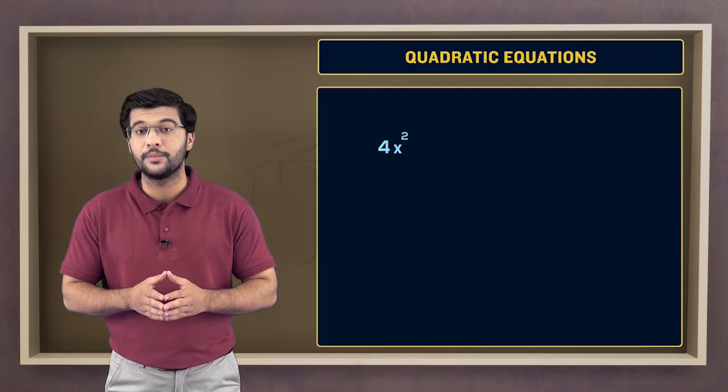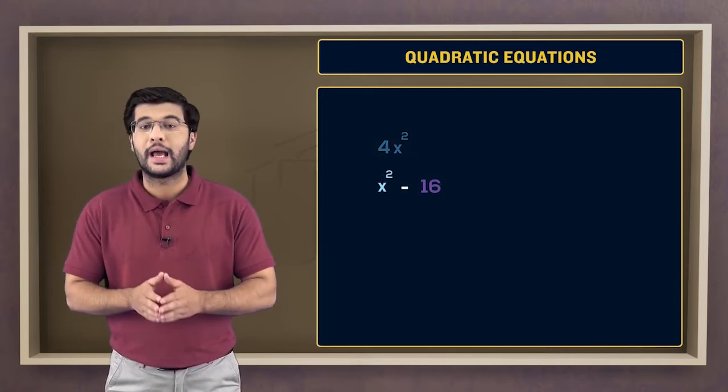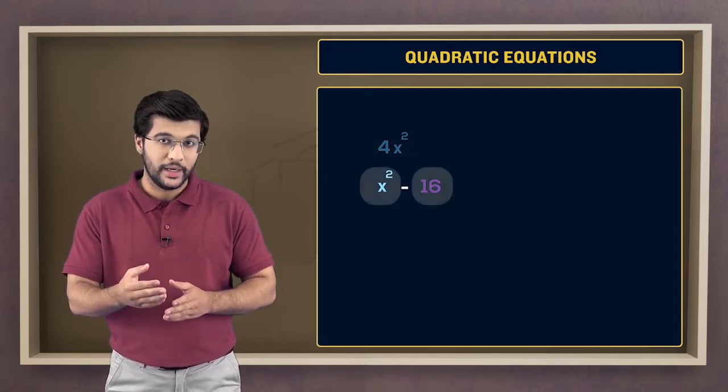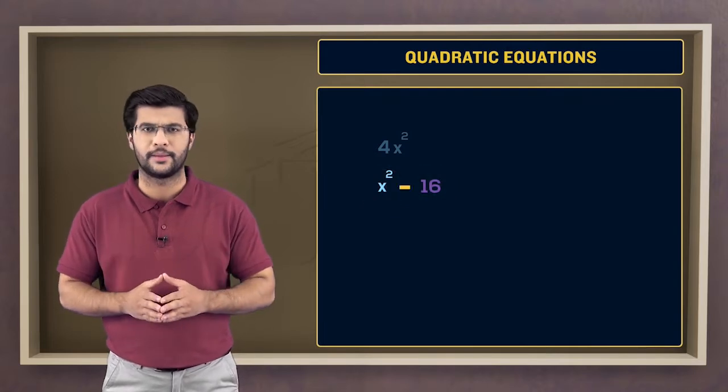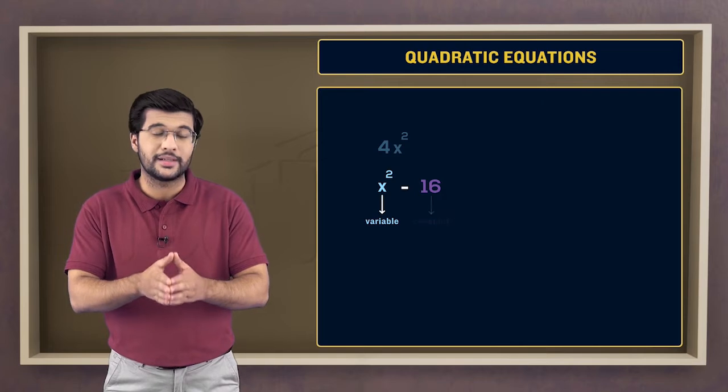This expression has a single term that is 4x squared. But this expression has two terms, x squared and 16, separated by a minus sign. The first term is a variable and the second one is a constant.